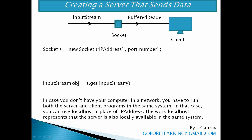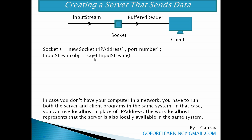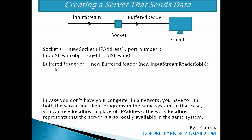Then add an InputStream to the socket so that it is available to receive data: InputStream obj = s.getInputStream(). Then to read the data from the socket into the client, use a BufferedReader: BufferedReader br = new BufferedReader(new InputStreamReader(obj)). We can read data using the read() or readLine() methods. The read() method reads a single character at a time, whereas readLine() reads a full string: str = br.readLine(). Finally, close the connection: br.close() — closes the BufferedReader; s.close() — closes the socket.